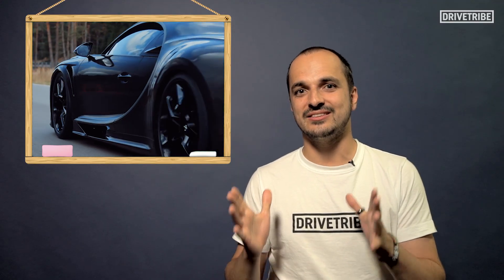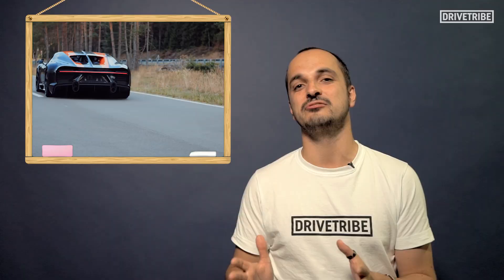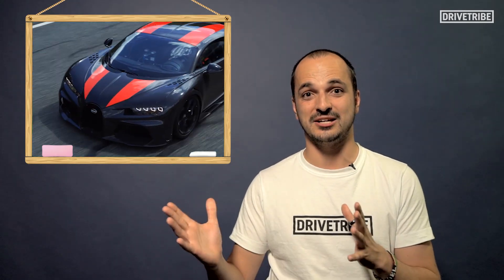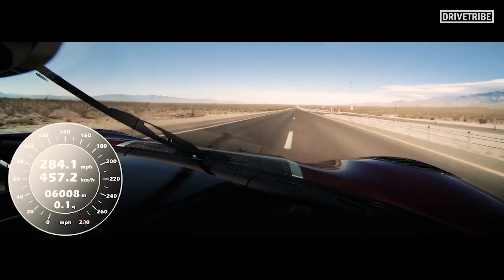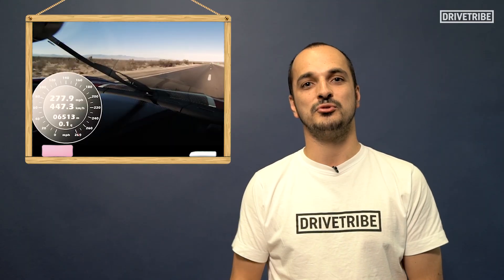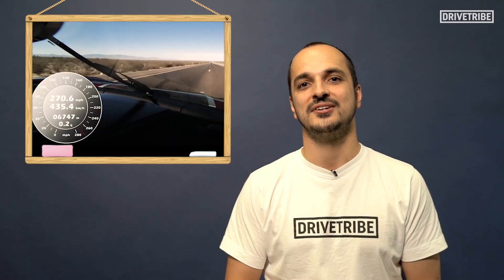Now it's fair to say that this car is probably a prototype for a Chiron Supersport, considering the colors look very much like the Veyron Supersport. After Koenigsegg set the bar at 284 miles an hour, it was only going to be a matter of time before someone came along and took things to the next level.